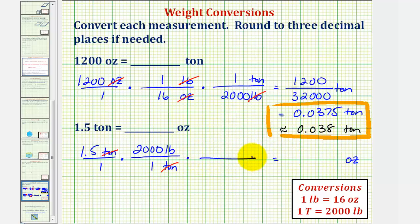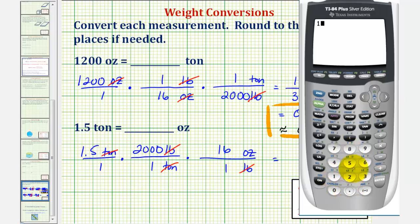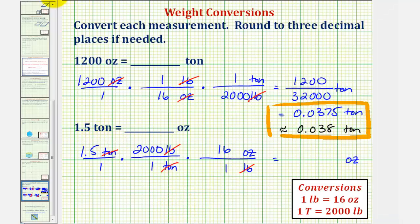Now we'll convert pounds to ounces by multiplying by another unit fraction. We want pounds to simplify out — notice it's in the numerator — so we'll put pounds in the denominator and ounces in the numerator. Our conversion is 16 ounces equals 1 pound. Pounds simplifies out. Notice in this product the denominator is equal to 1, so we can just find the product of the numerators: 1.5 times 2,000 times 16, which gives us 48,000. Therefore, 1.5 tons equals 48,000 ounces. I hope you found this helpful.